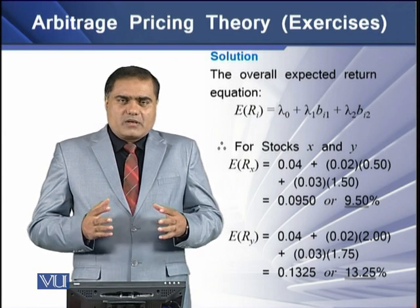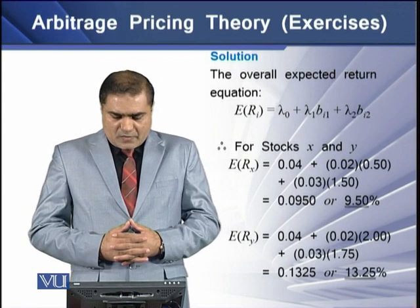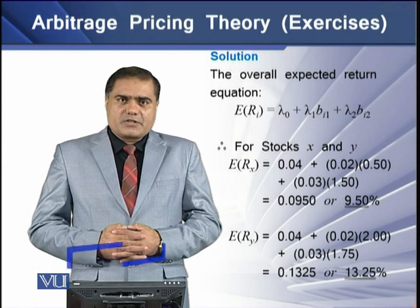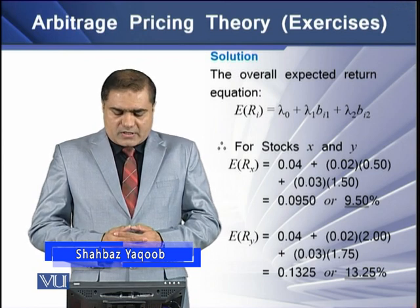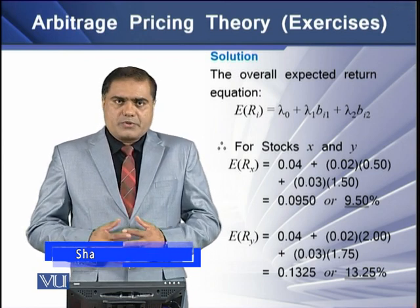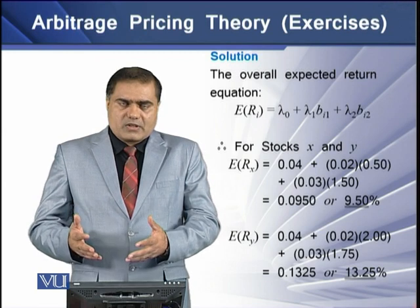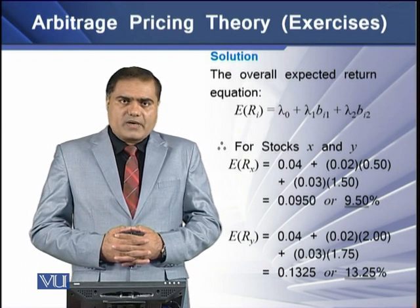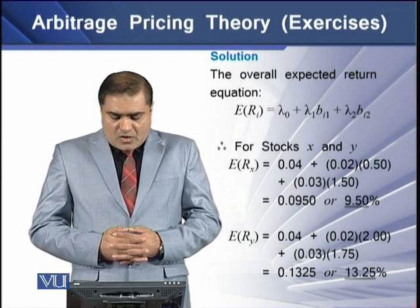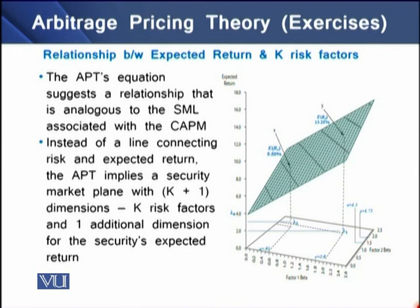Using this data, we can determine the expected return for both assets X and Y. The expected return equation is: E(Ri) = lambda naught + lambda1 × beta1 + lambda2 × beta2. Putting in the values, the expected return on asset X is 9.5% and the expected return on asset Y is 13.25%.